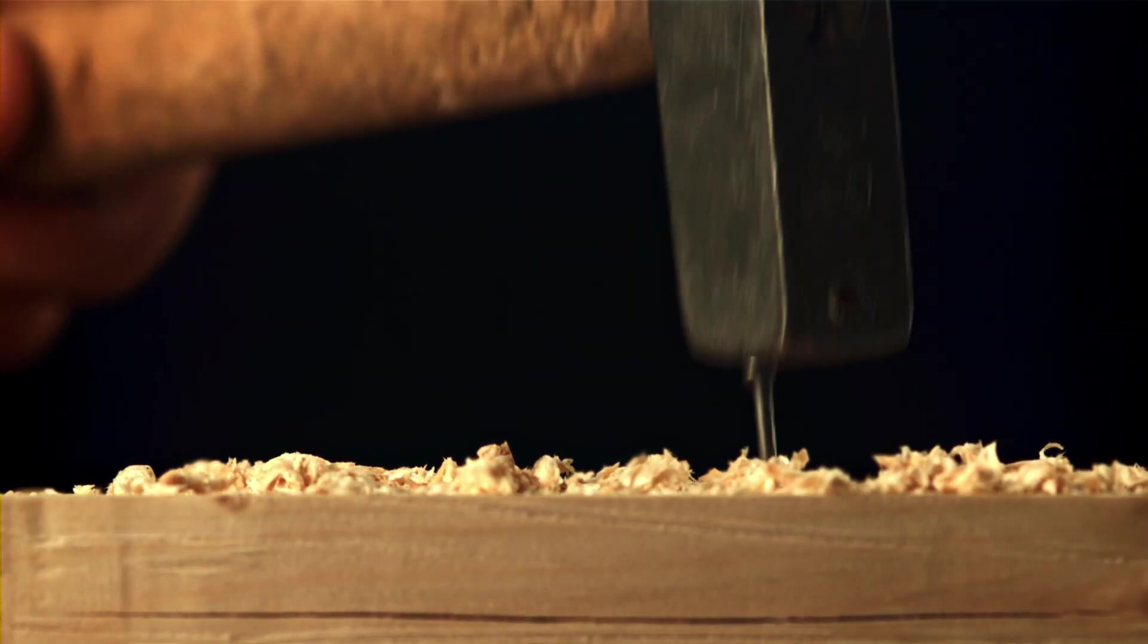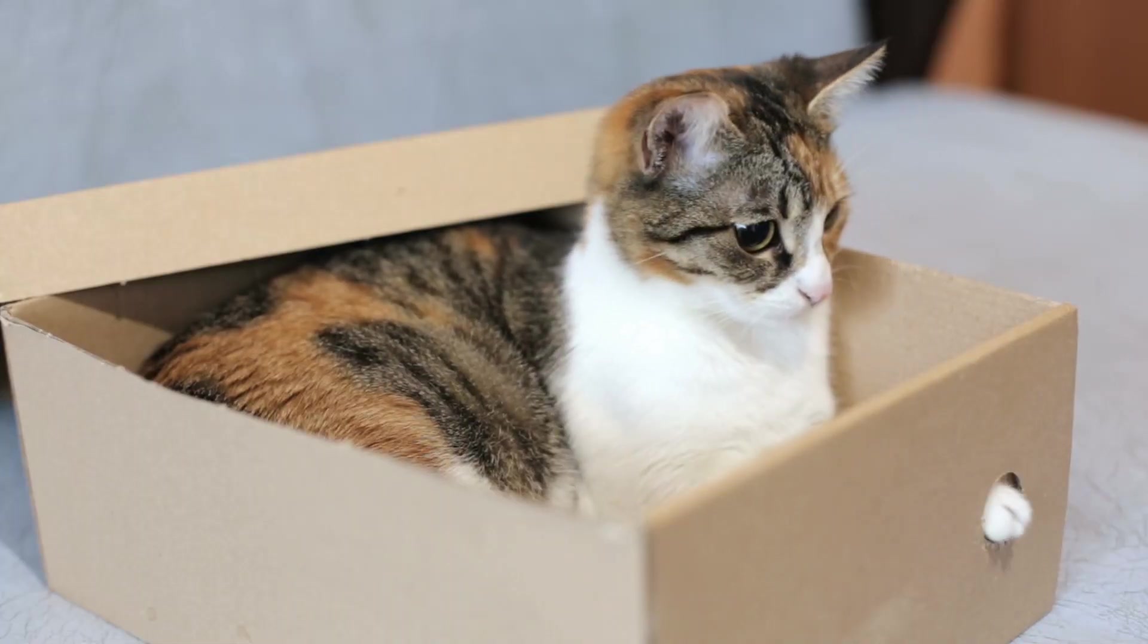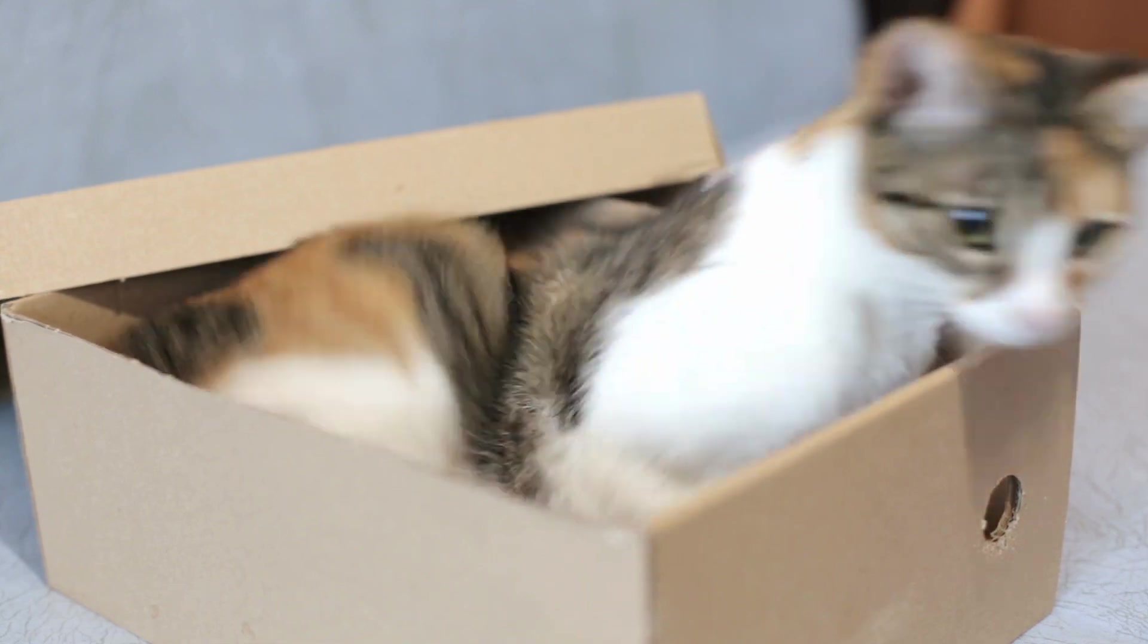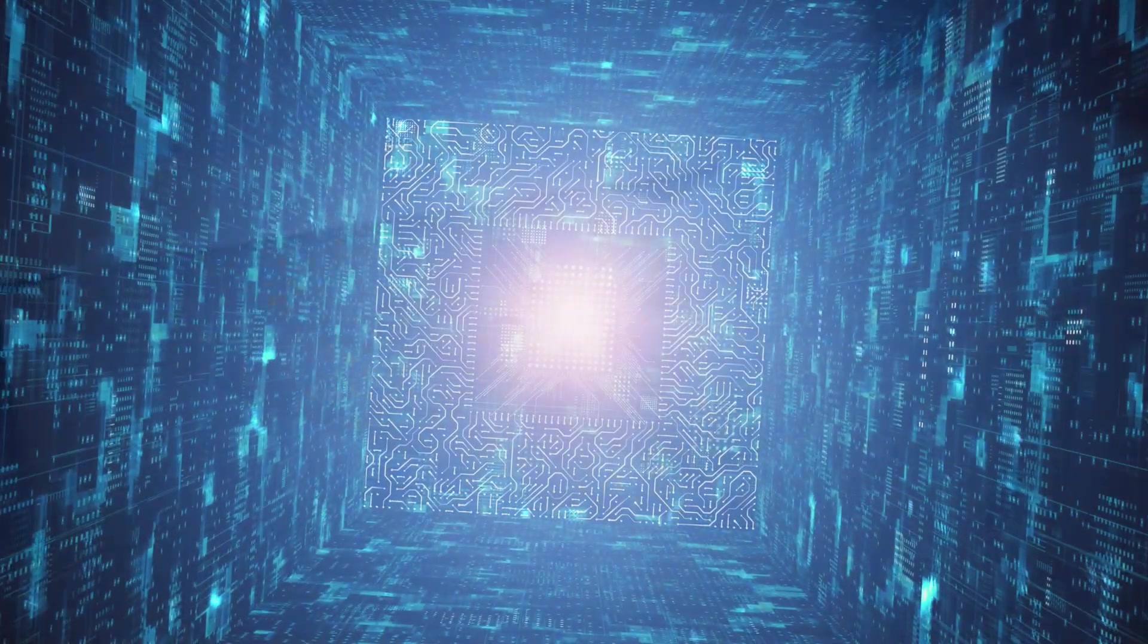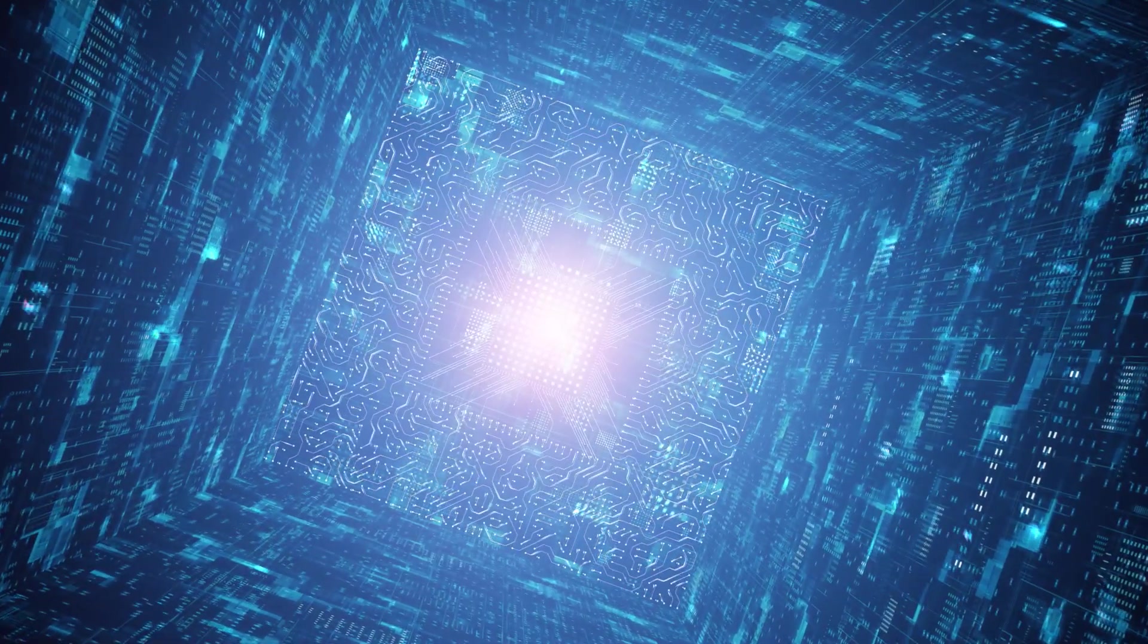If the Geiger counter detects radiation, it triggers the hammer, releasing the poison, and potentially killing the cat. Until the box is opened, the cat simultaneously exists in both alive and deceased states, a bizarre consequence of quantum mechanics, where observation alters outcomes.